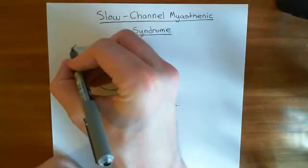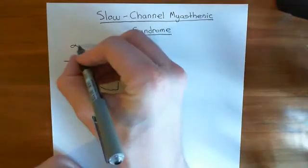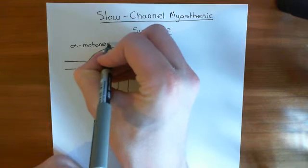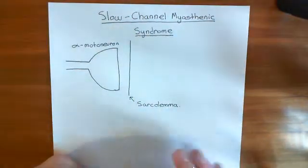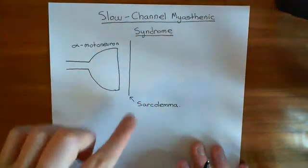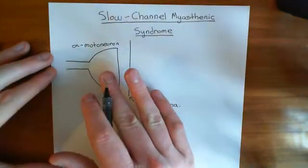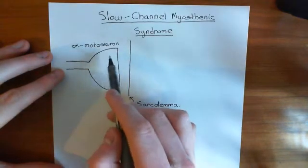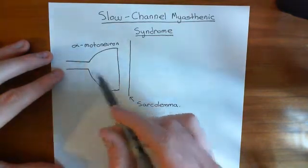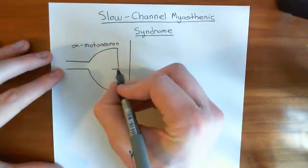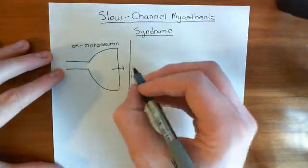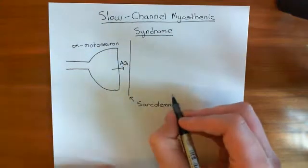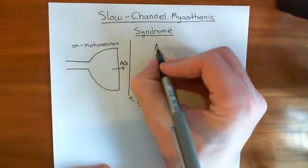This neuron with its axon terminal interfaced with the sarcolemma is an alpha motor neuron, and it's going to innervate the skeletal muscle cell. When it fires an action potential, the action potential will make its way along the axon and then propagate into the axon terminal, and this will cause the release of the neurotransmitter acetylcholine (ACh) into the synaptic cleft.